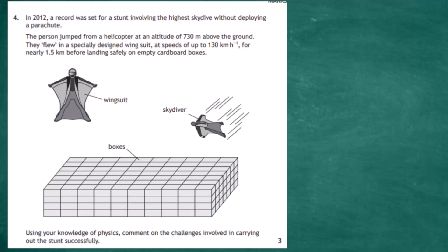Question 4 from Section 2 of the 2022 Higher Physics examination from the SQA. In 2012, a record was set for a stunt involving the highest skydive without deploying a parachute. The person jumped from a helicopter at an altitude of 730 meters above the ground and flew in a specially designed wingsuit at speeds of up to 230 kilometers per hour for nearly 1.5 kilometers before landing safely on empty cardboard boxes. This is an open question.